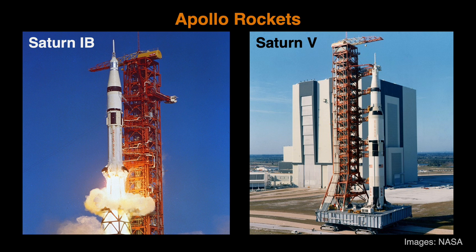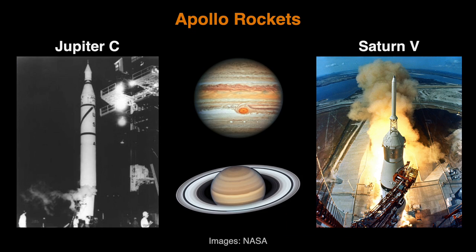Let's look at the two Saturn rockets used for Apollo missions in more detail. You may wonder why the rocket is called Saturn. The US rocket program had a series of rockets called Jupiter — Jupiter C is shown on the left. When they were developing more powerful rockets, they wanted to move on to a different name, and used Saturn since it's the planet after Jupiter.